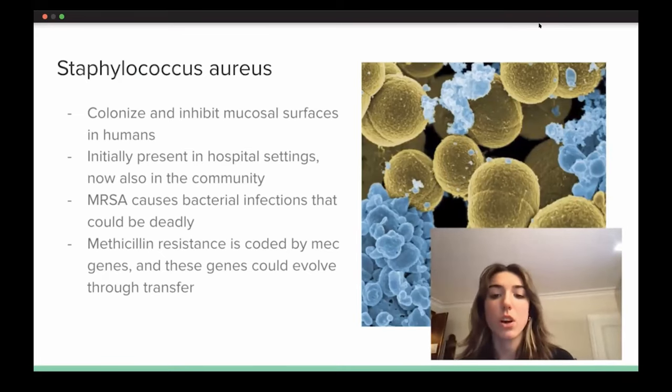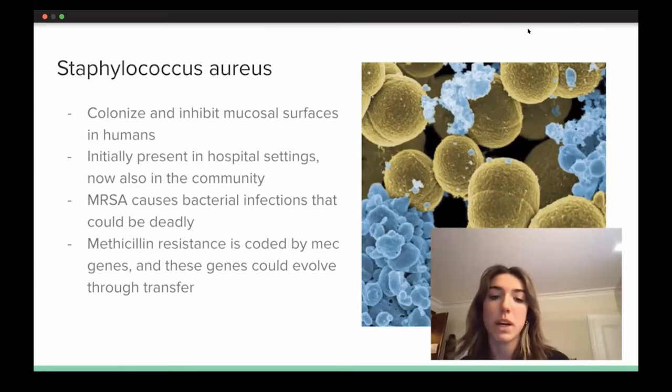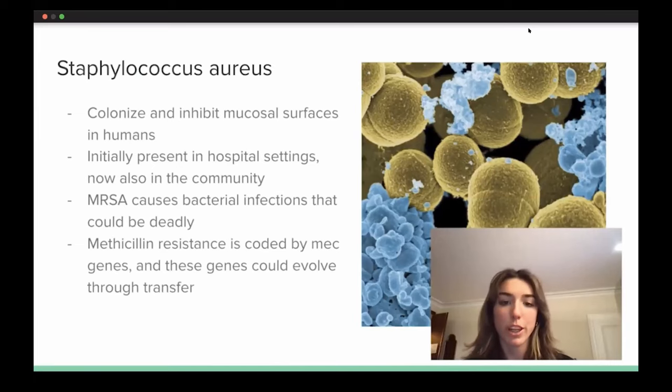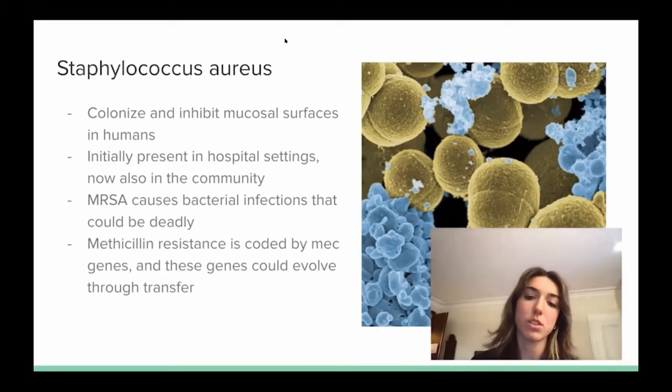Methicillin resistance, as I said, is coded by mec genes, and mec genes are on a mobile genetic element called the SCC-mec. It's a cassette chromosome in Staphylococcus, and mecA is actually responsible to encode the penicillin-binding protein 2A, which I'm going to talk about later, which has a low affinity for beta-lactams, therefore having resistance to almost all beta-lactam-class antibiotics, such as methicillin, penicillin, and cefazolin.